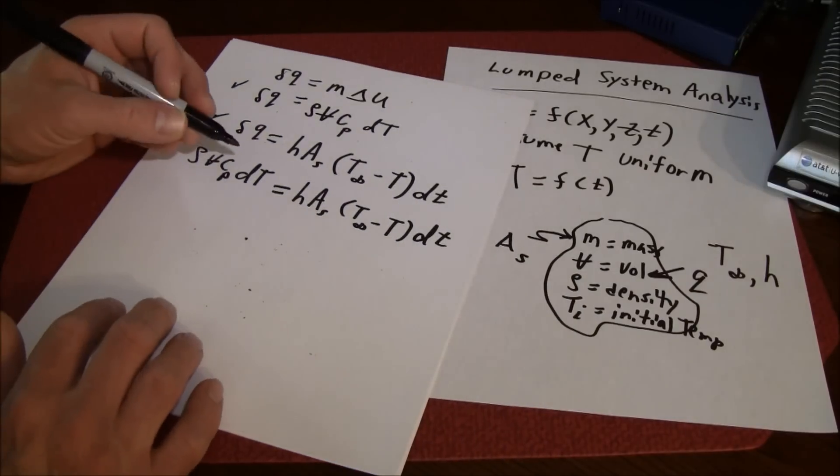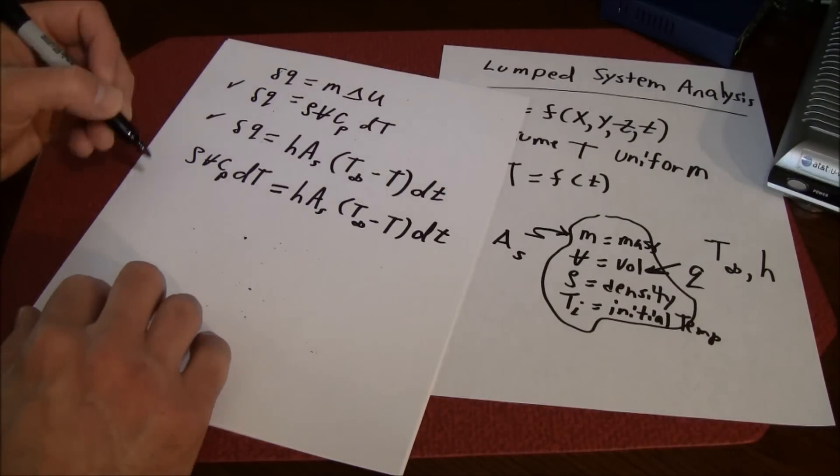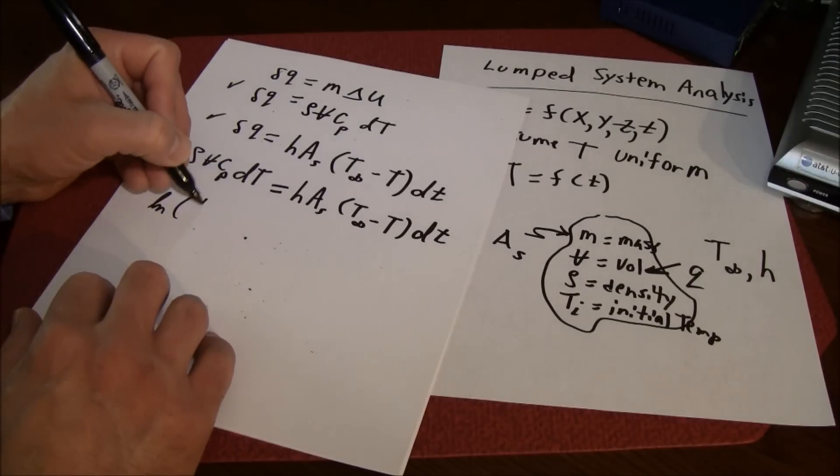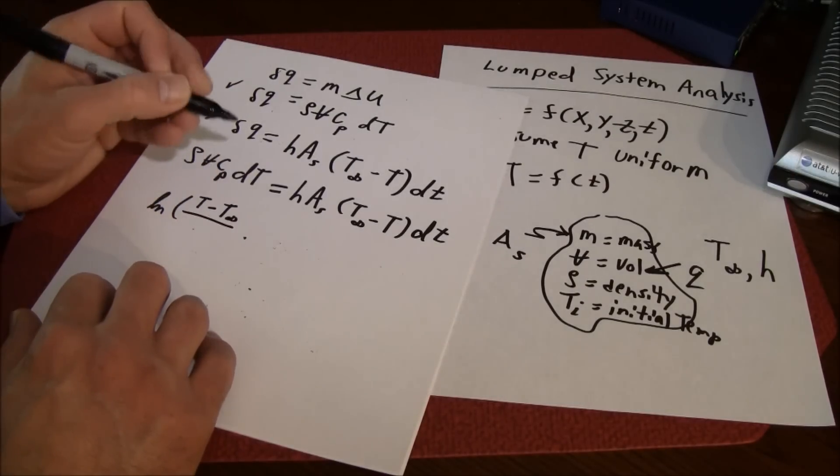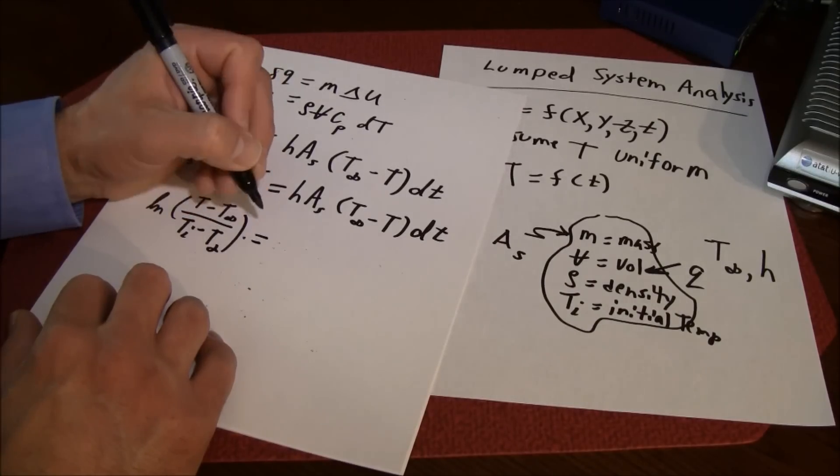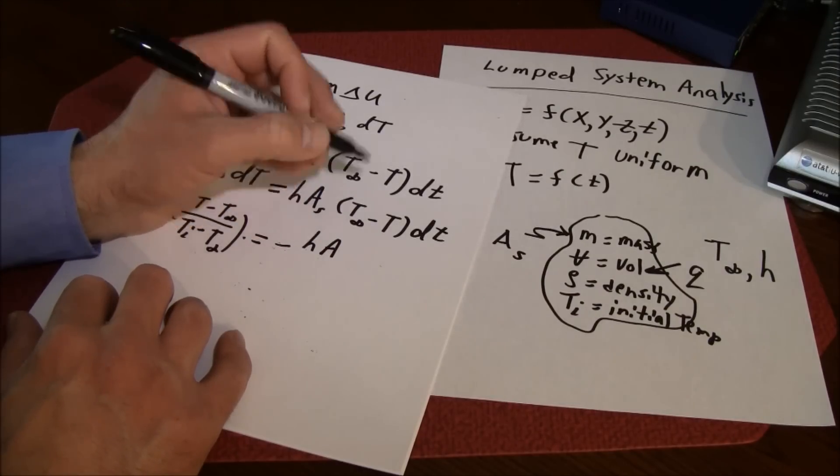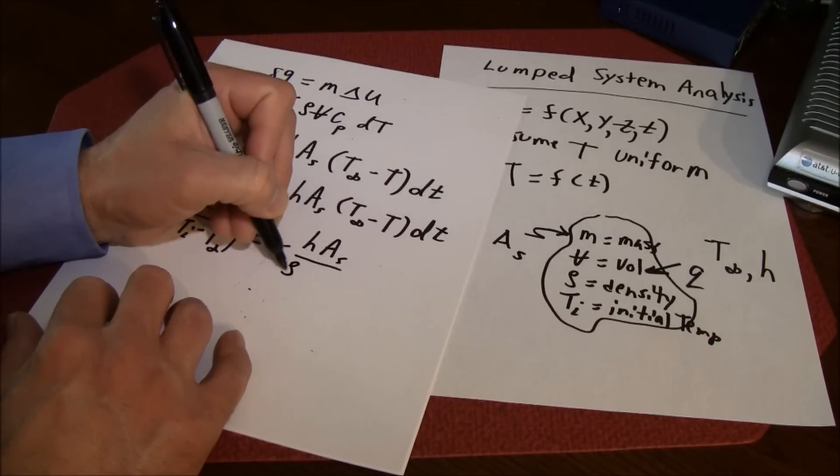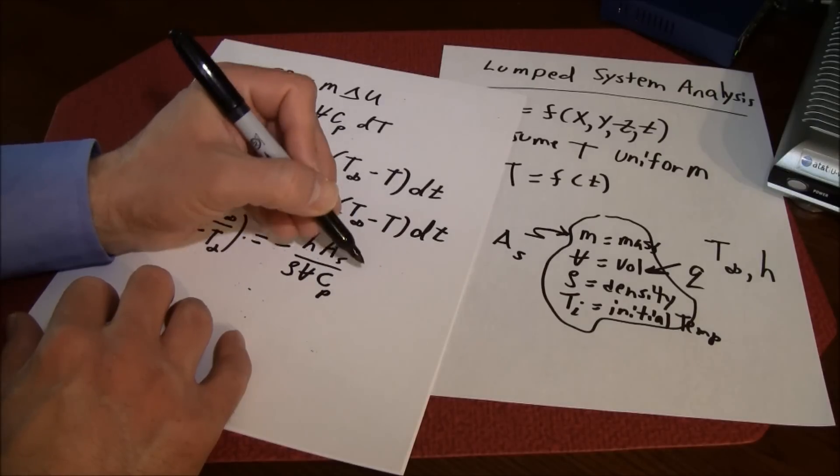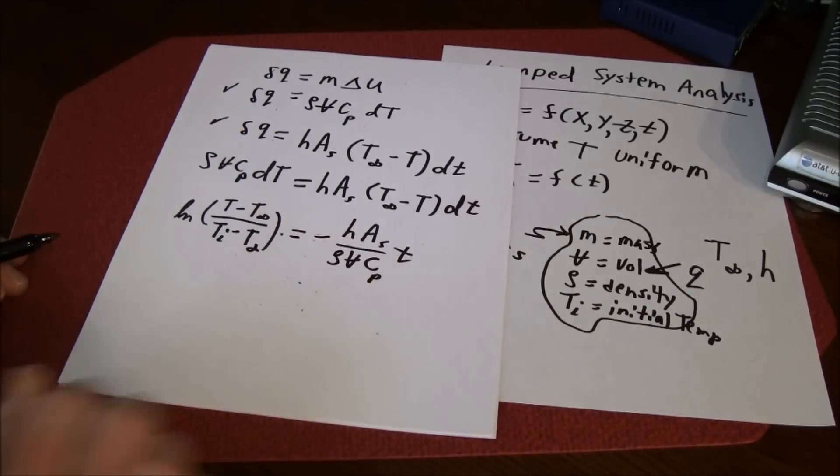If you separated terms and integrated, what you would get is an equation that looks like this: the natural log of T minus T infinity divided by T initial minus T infinity equals negative h times the surface area divided by rho V c sub p times the little t's in time.